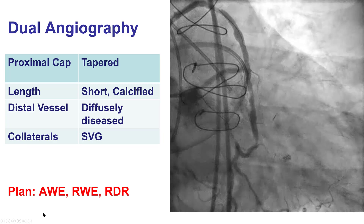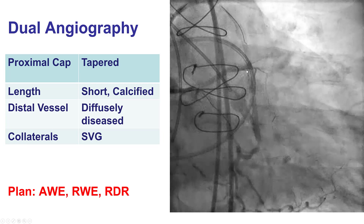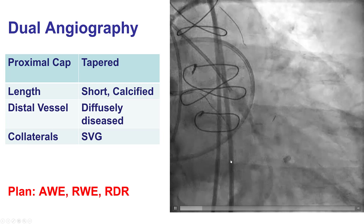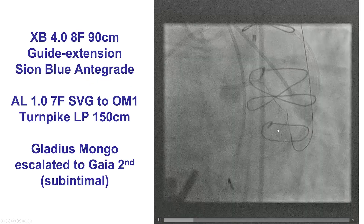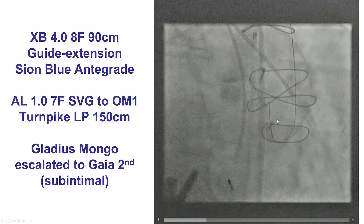Our plan was to try first antegrade, and then try with retrograde. The patient had a low ejection fraction, which is why we did a right heart catheterization. His wedge pressure was only 13, therefore we decided to not use it. We tried antegrade wire escalation, but the wire could not enter into the distal true lumen, and as a result, we changed to the retrograde approach.